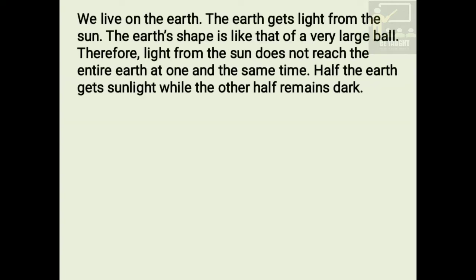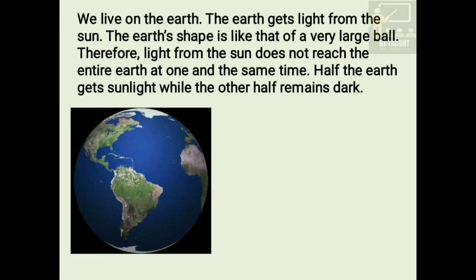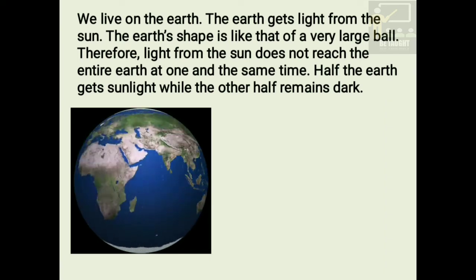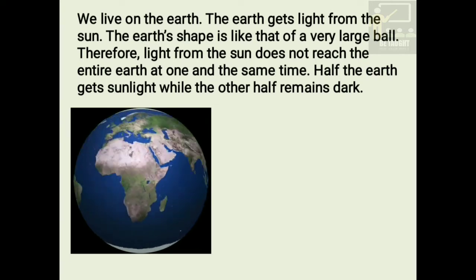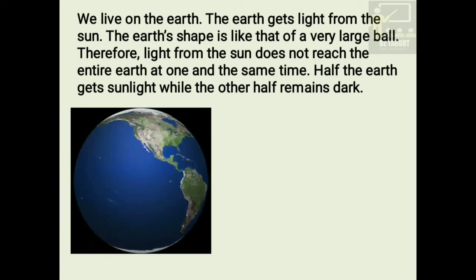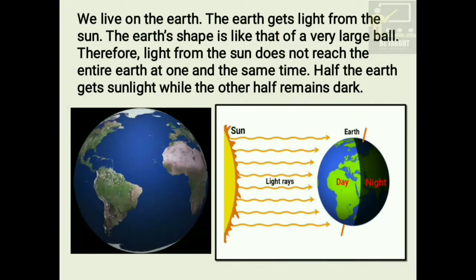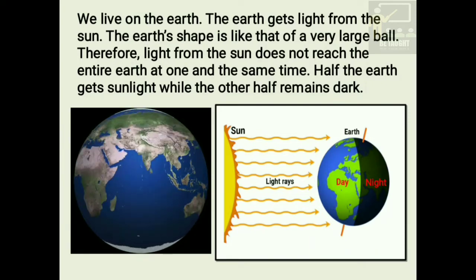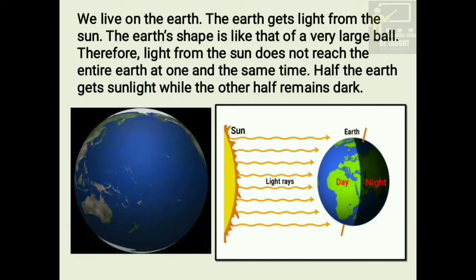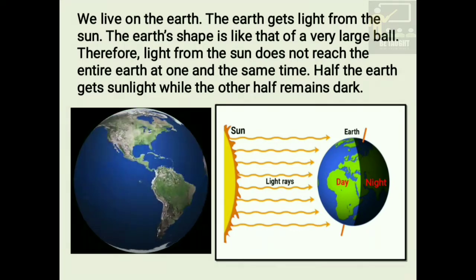Now why does this happen? We live on the earth. The earth gets light from the sun. The earth's shape is like that of a very large ball. Therefore, light from the sun does not reach the entire earth at one and the same time. Half the earth gets sunlight, while the other half remains dark.